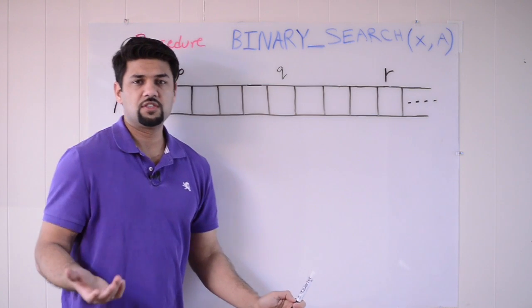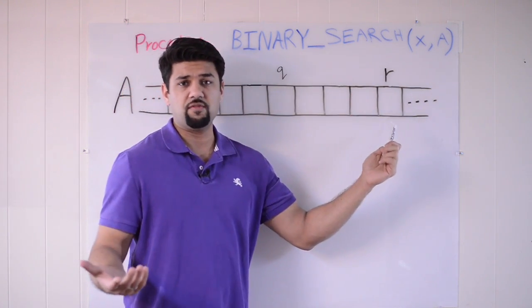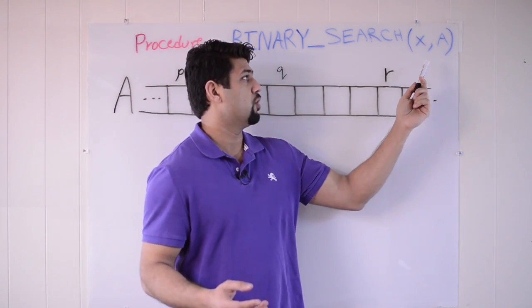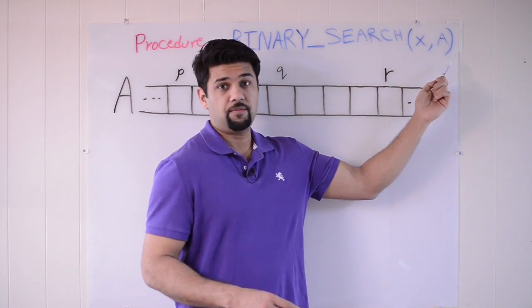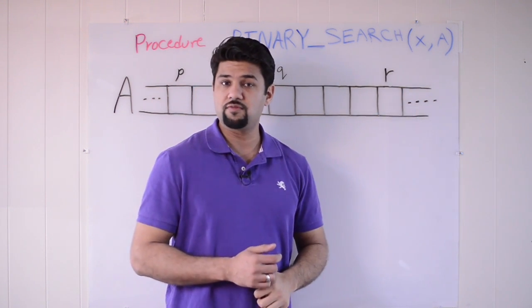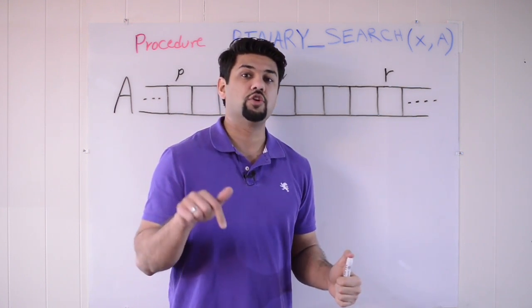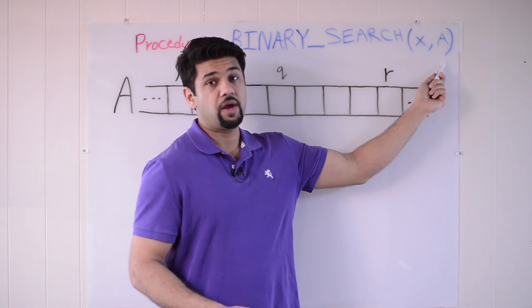So here's some pseudocode lingo. It's called procedure. Since this is a Java course, you can just think of this as the method, binary search. I just gave it a name, capital letters, doesn't really matter what the name is. But what's important here is that this method accepts two arguments, x and a. X is the value that we're searching for and a is the array in which we want to search that value in. So we're searching for x in the given array a.